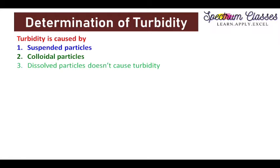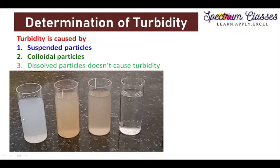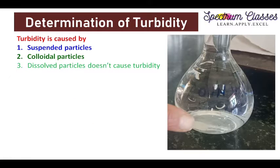Now, coming to the causes of turbidity — suspended particles as well as colloidal particles cause turbidity. Here you can clearly see different types of turbidity: this is deionized water, having less turbidity, as compared to other samples showing different kinds of turbidity. An important point is that dissolved particles do not cause any kind of turbidity. For example, here we have a solution in which some salt is dissolved and it is transparent, so dissolved particles don't cause turbidity.